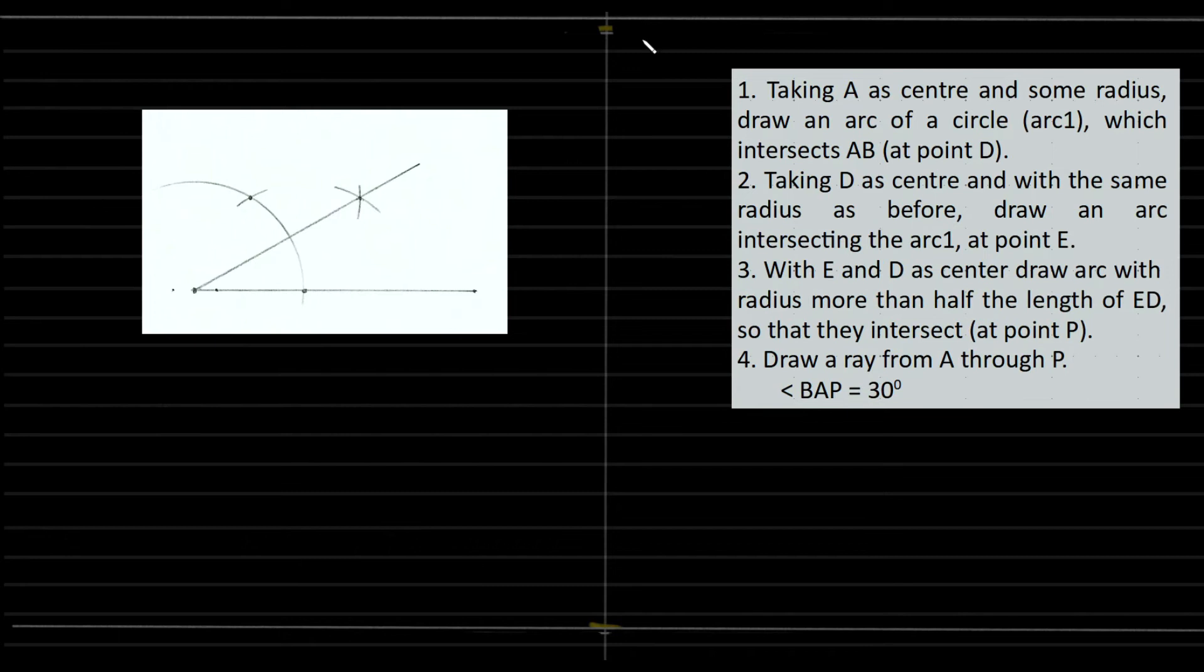So come back to your screen. We have the steps of construction. Take A as a center, and let's call this AB. With A as center and some radius, draw an arc of a circle.